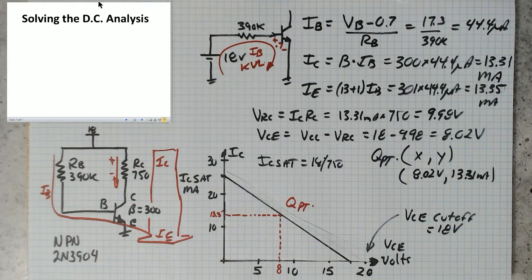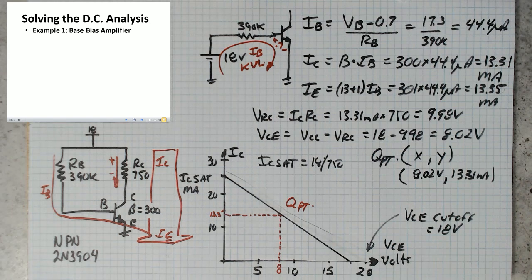Okay, let's do an example on how to solve the DC analysis in a circuit. And as our first example, why don't we start with the base bias amplifier.